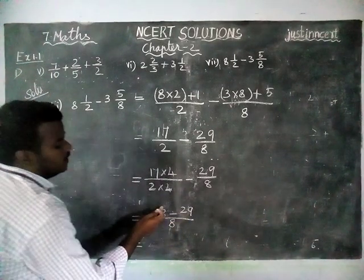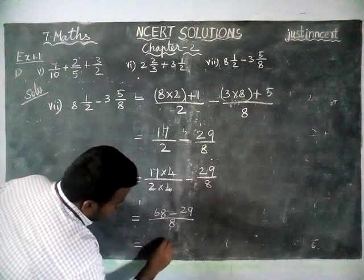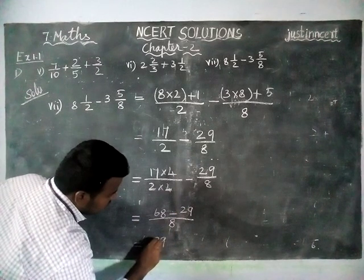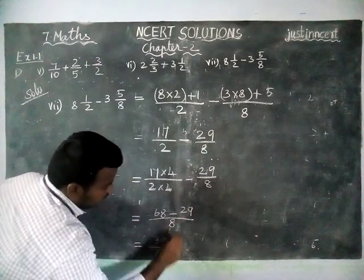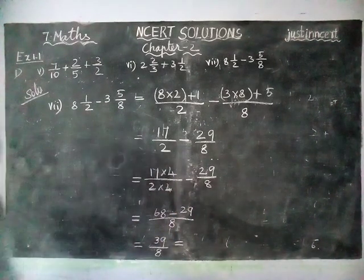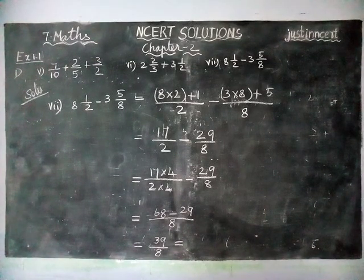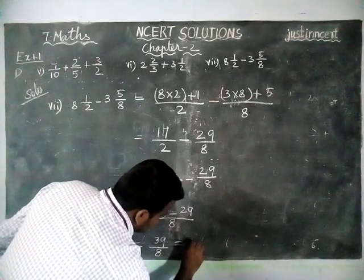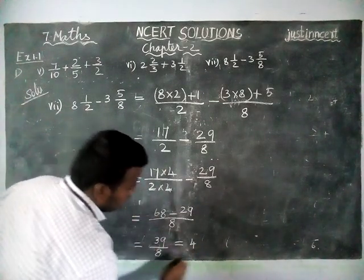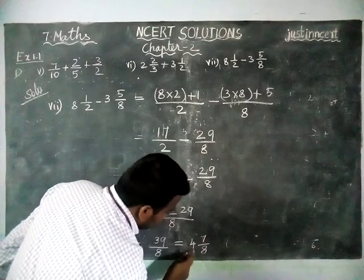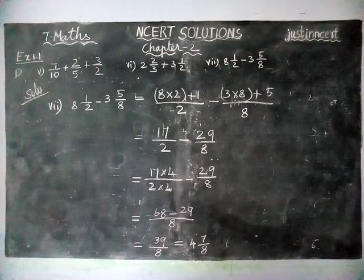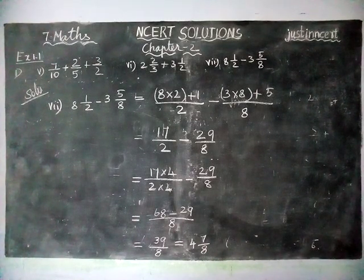In 8 we cannot subtract 9, so we borrow: 18 minus 9 equals 9. Then 5 minus 2 equals 3, with denominator 8, giving 39/8. In 39 how many 8s? 8 fours are 32, with remainder 7. So the answer is 4 and 7/8. Thank you students — kindly give your suggestions in the comments box and share with your friends!